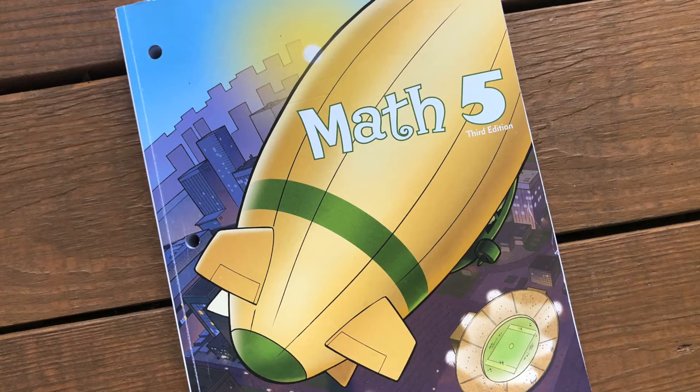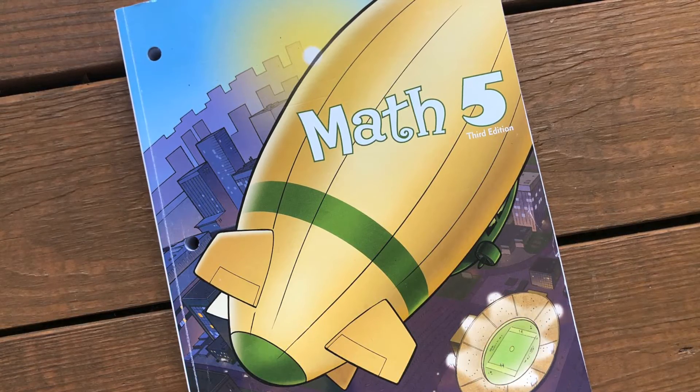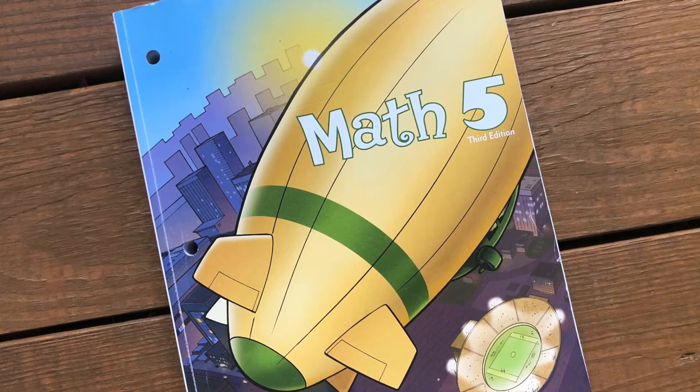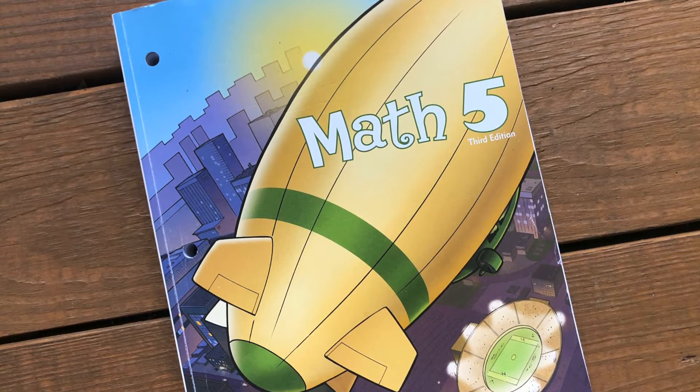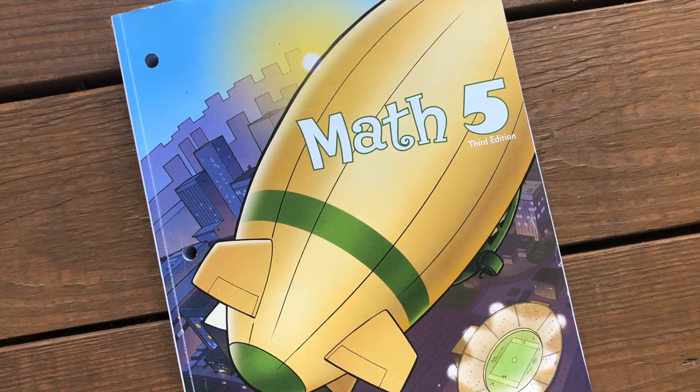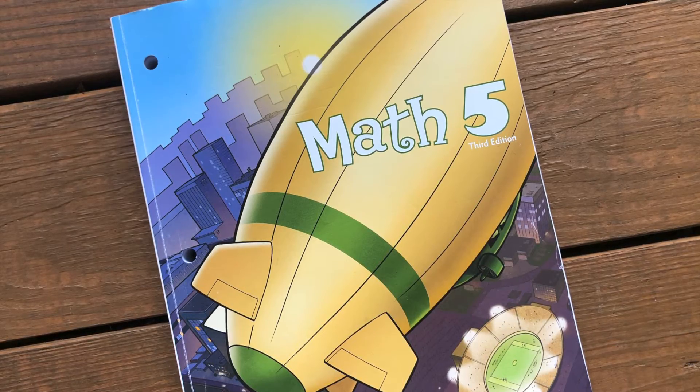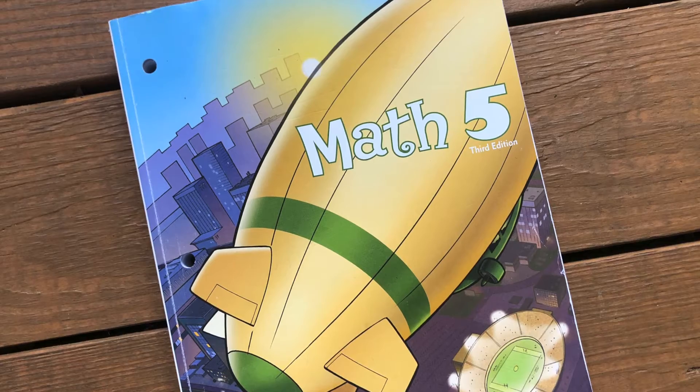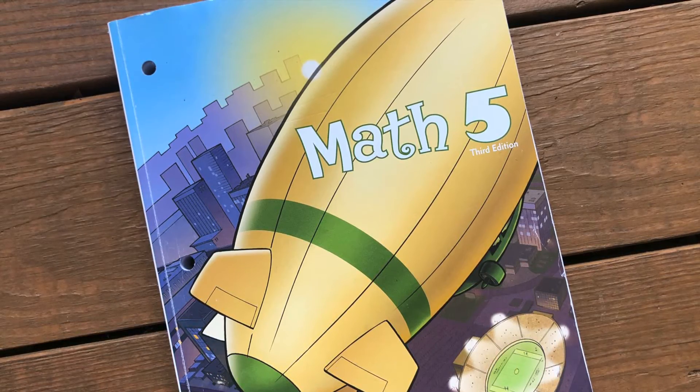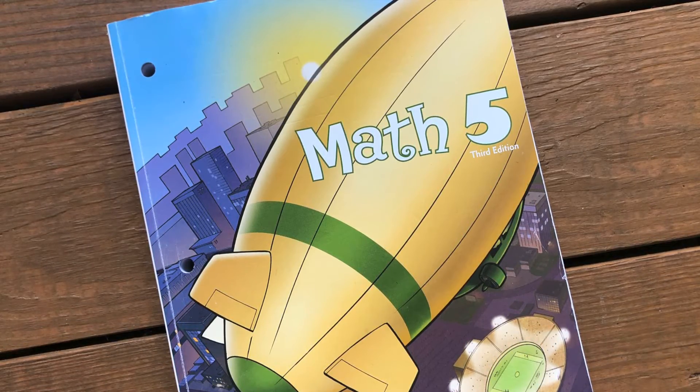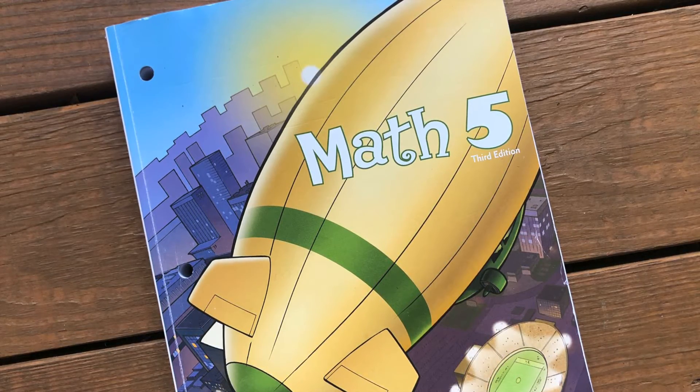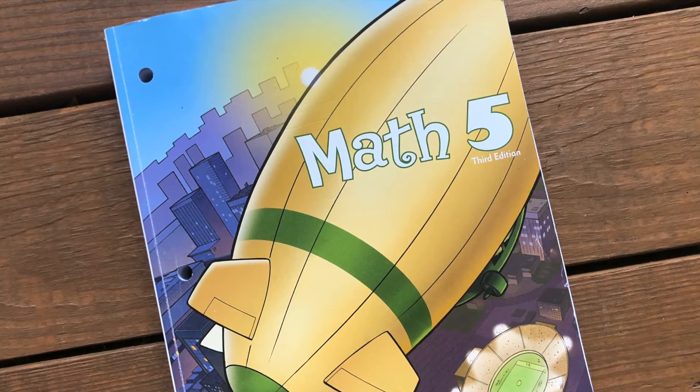And my fifth grader doesn't need to be watching math videos. I can easily explain the concept and then she can get right to work on her math. Now the reason I did the third edition instead of doing their new one is because I could find it pretty cheaply on eBay or whatever. So if you're okay with the older editions, all you need is the student work text. You can do math in the elementary ages for very low cost and very inexpensively.